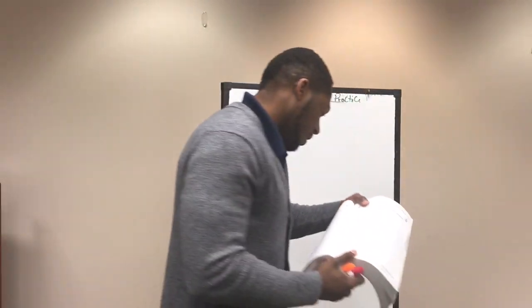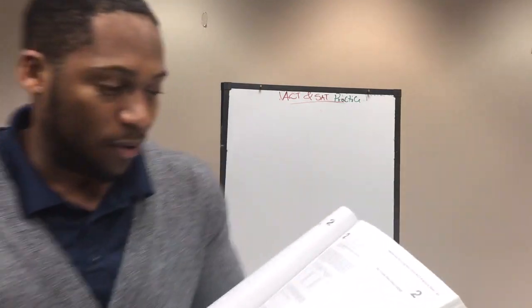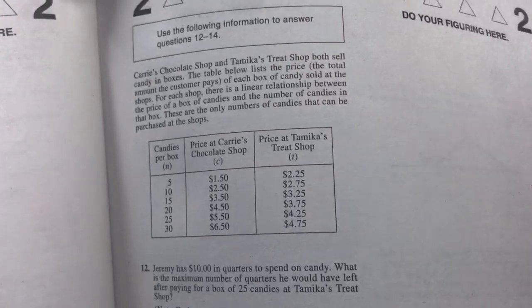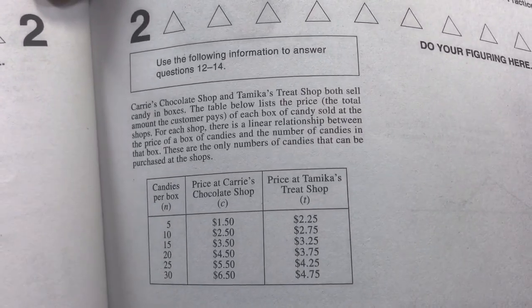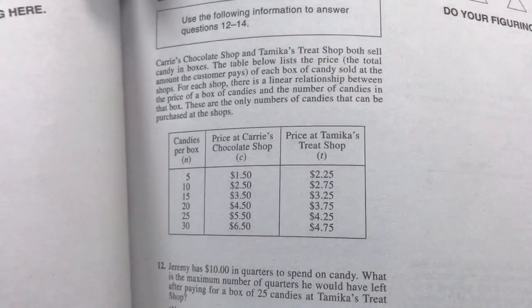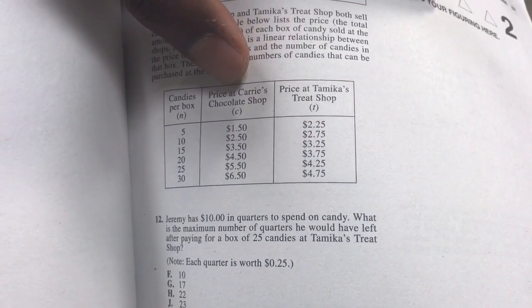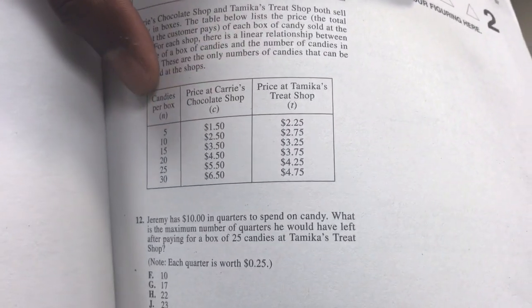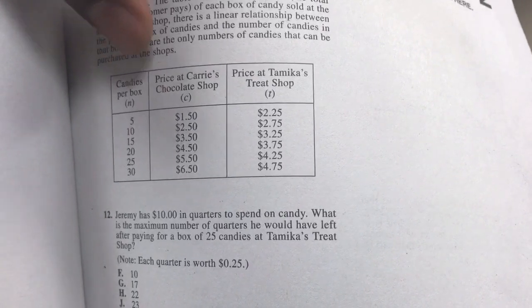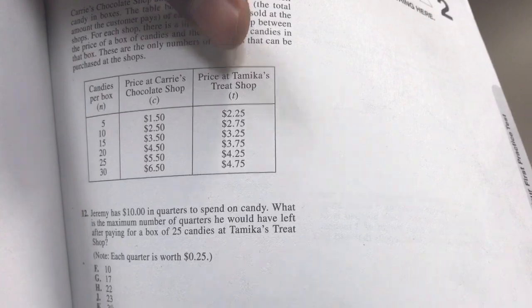Let's talk a little bit about candy and chocolate. Let me show you what we have here. Basically, it gives you a table that has two shops right here. They give you the amount of candies in a box, the name of the first shop, and the name of the second shop.